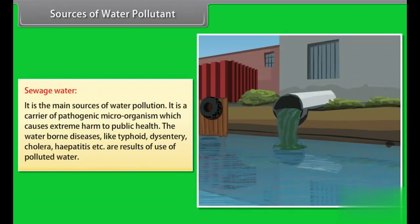Sewage water is the main source of water pollution. It is a carrier for pathogenic microorganism, which causes extreme harm to public health. The water-borne diseases like typhoid, dysentery, cholera, hepatitis, etc. are results of use of polluted water.